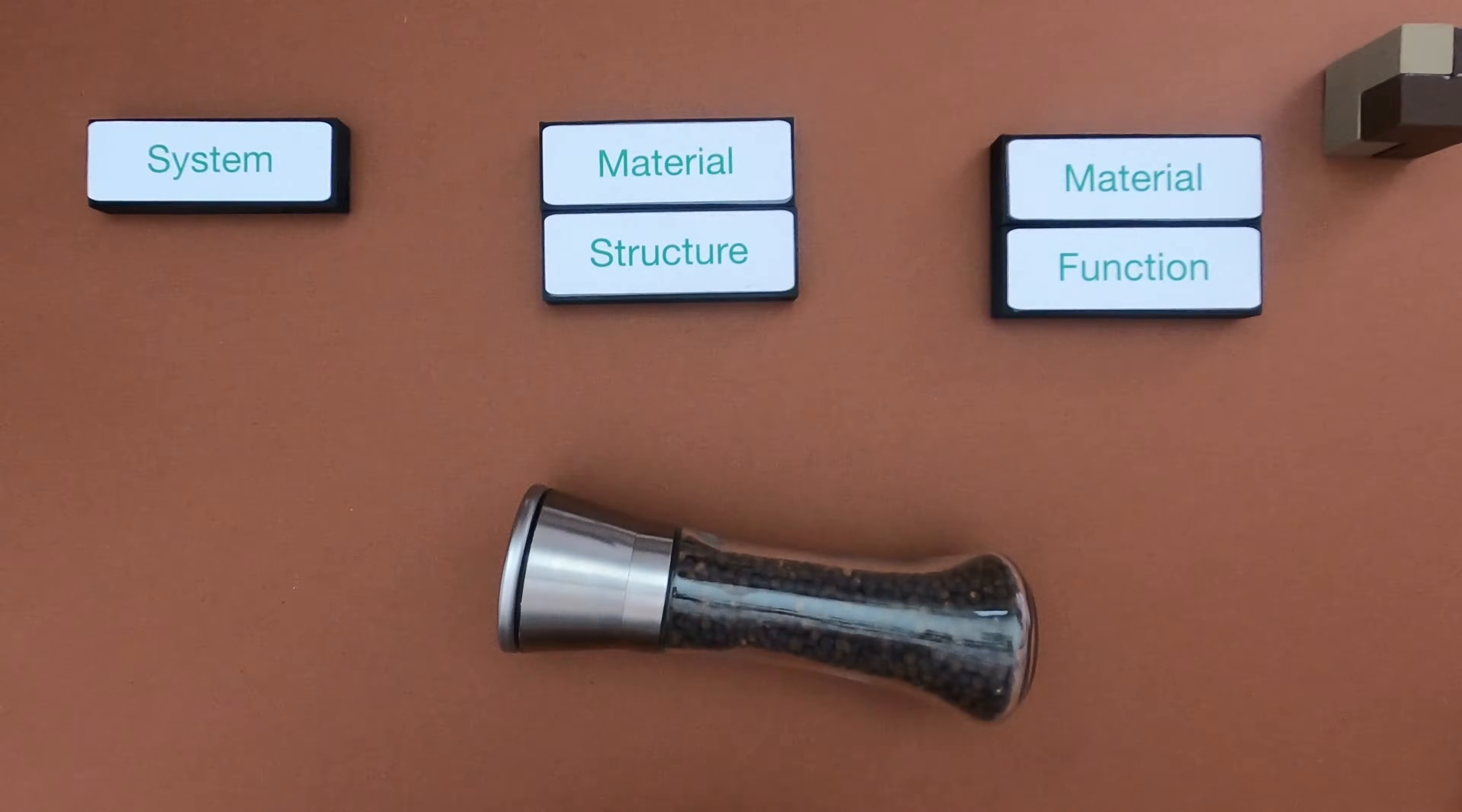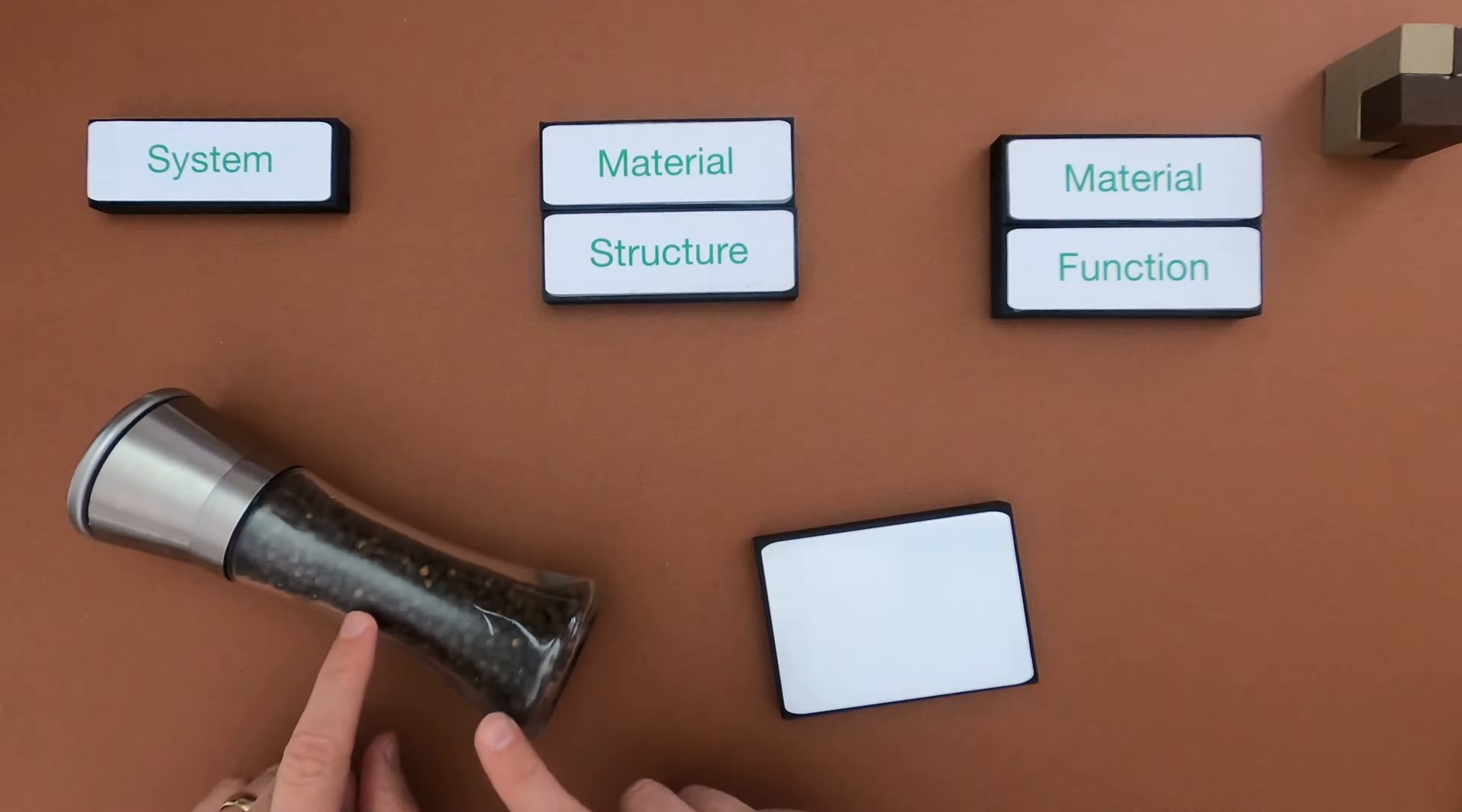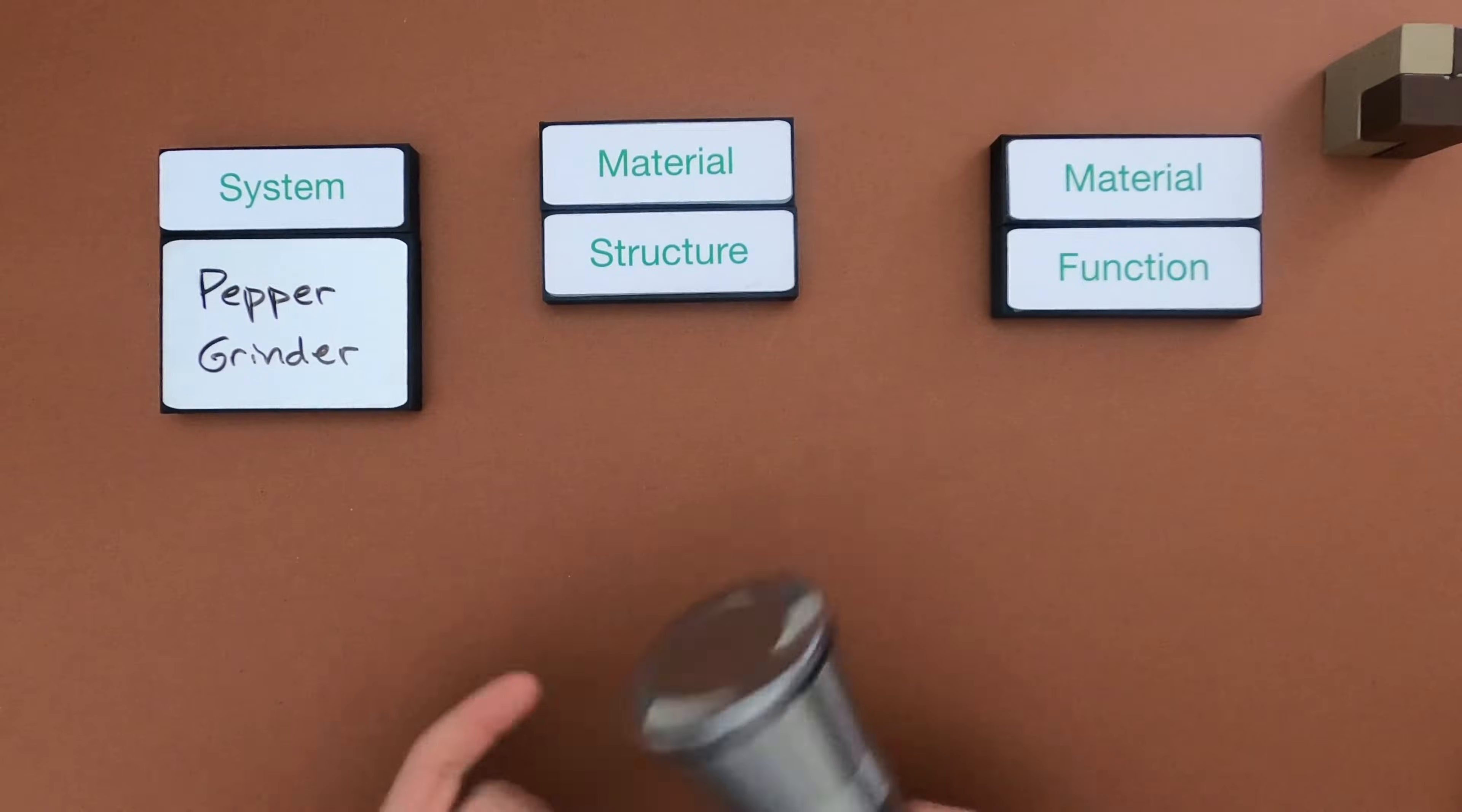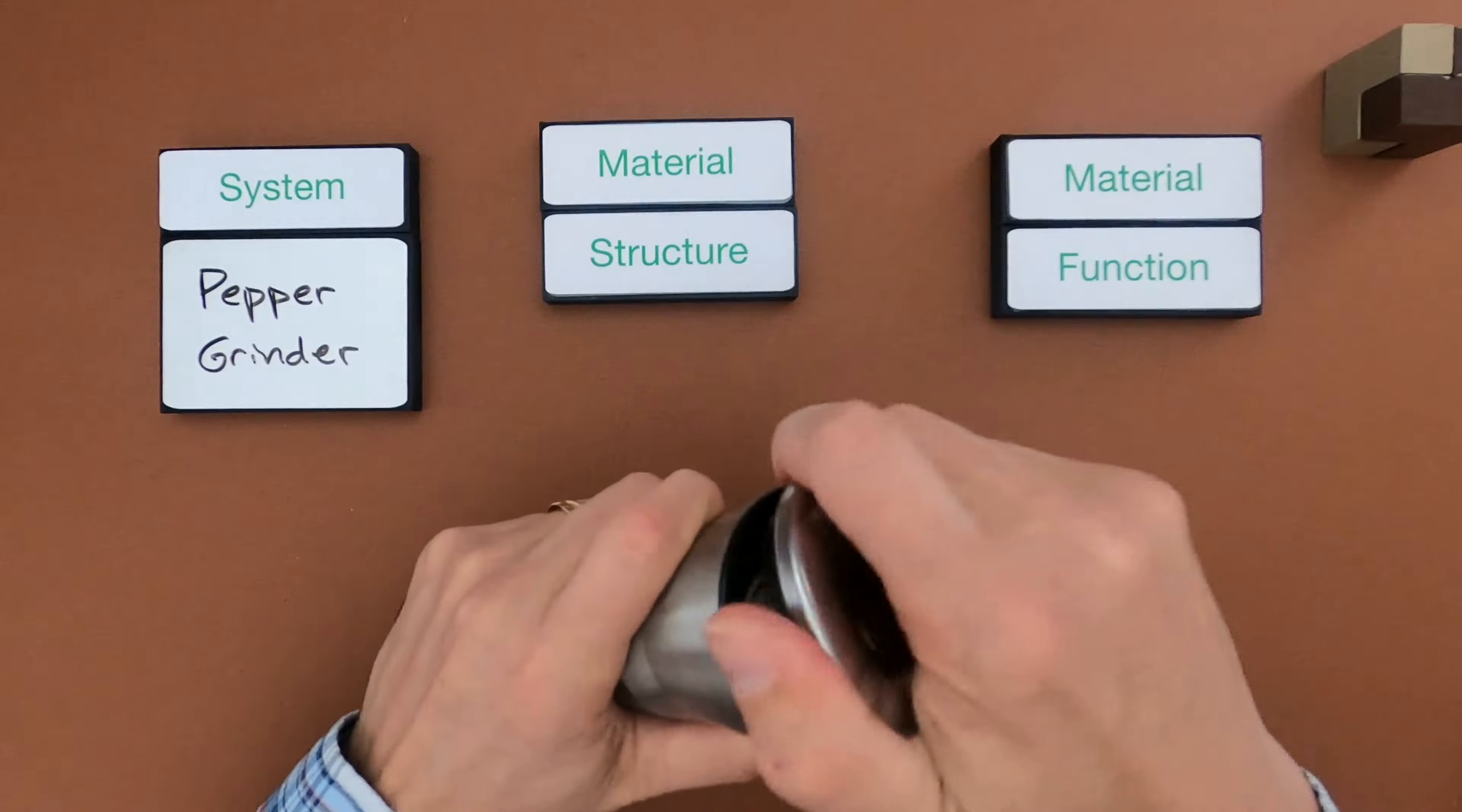Okay, now that I've shown you my thinking around material structure and function using the scissors, we're going to do the same thing with this pepper grinder. So let me define the system. I should also show you how a pepper grinder works. So you can have these peppercorns in here, at the top there's a lid, I can pull that off.